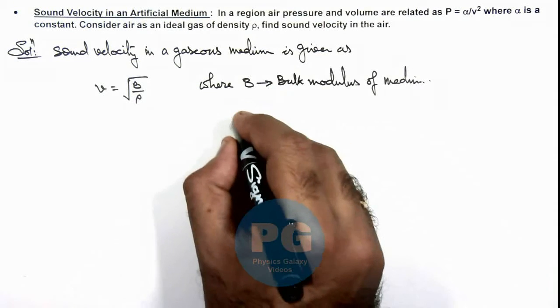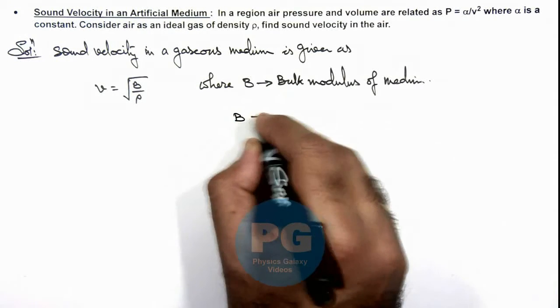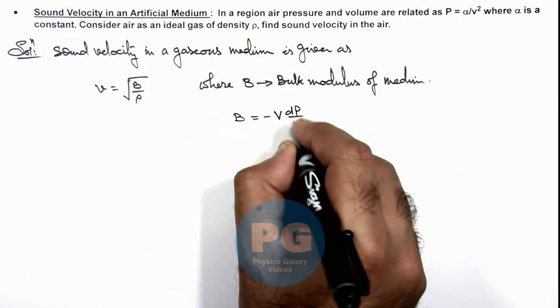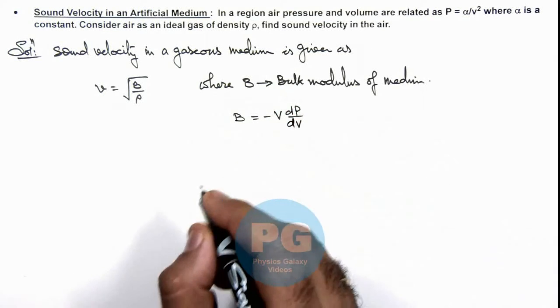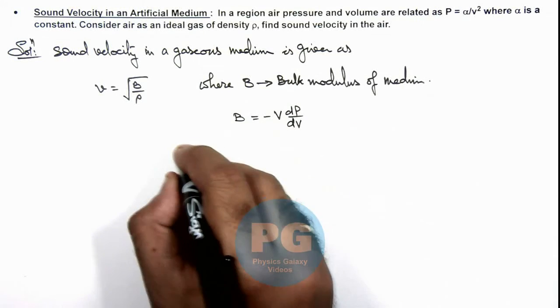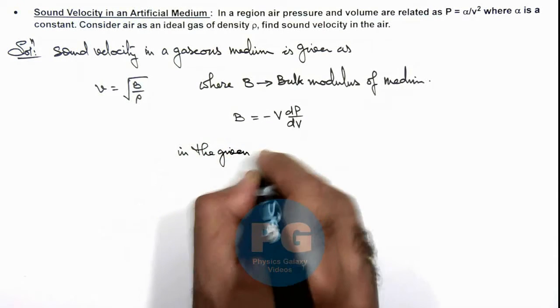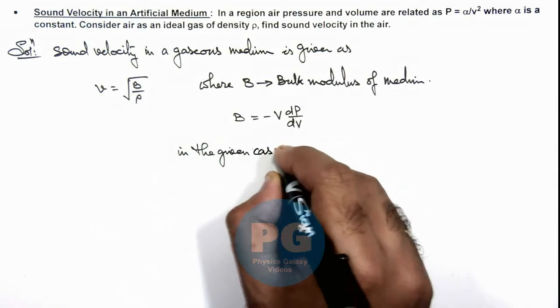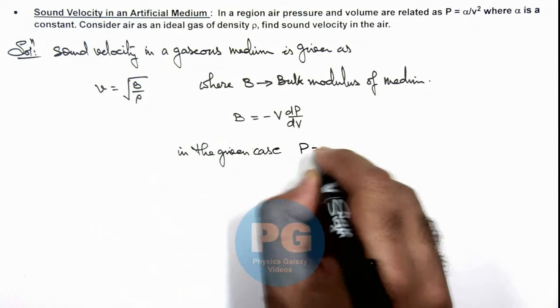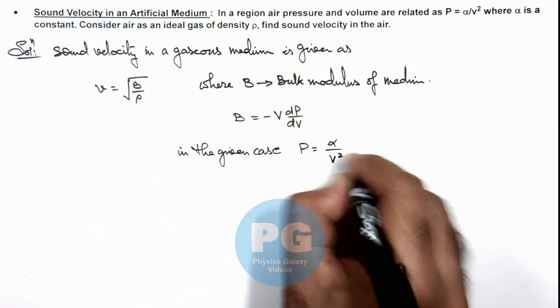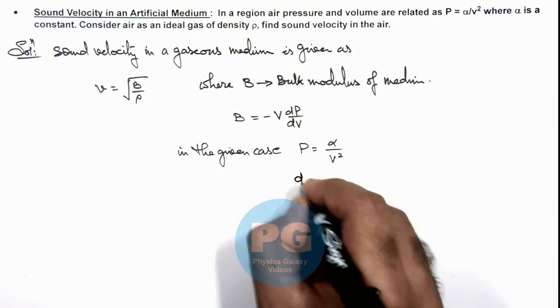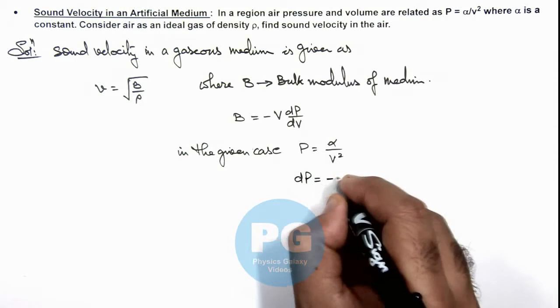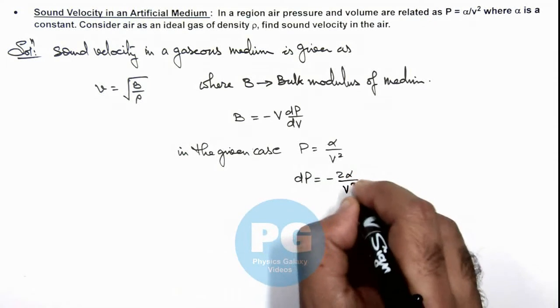And the value of B in a given medium is given as minus V dP over dV. And in the given case, we are having P equals alpha by V squared. So we can calculate the value of dP, which is minus 2 alpha by V cubed dV.